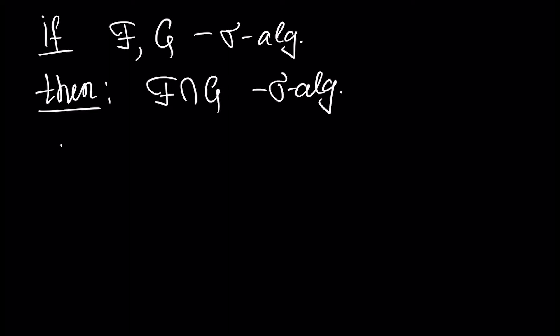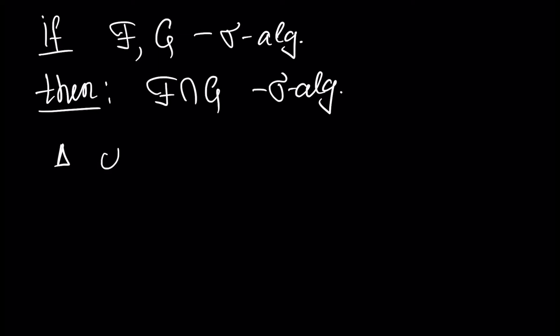The proof is very easy. We want to show that the intersection of F and G is a sigma algebra. A sigma algebra, by definition, consists of three parts. First of all, we have to show that the empty set is inside this intersection.